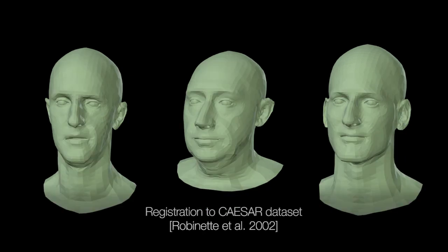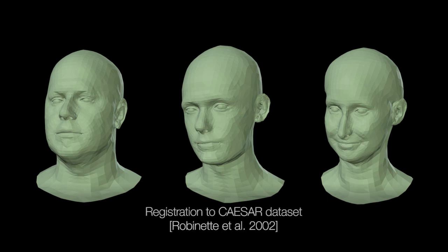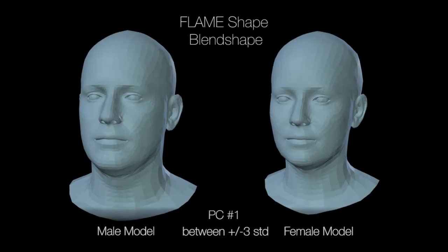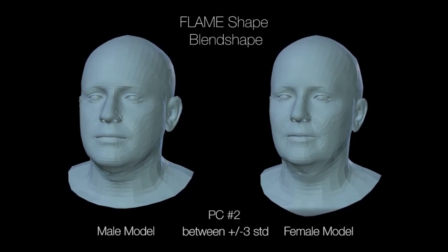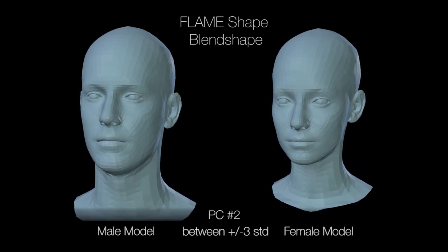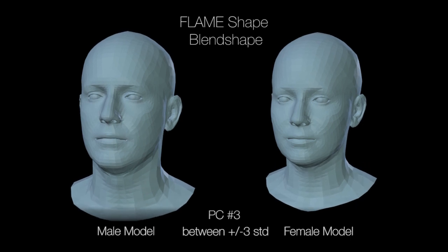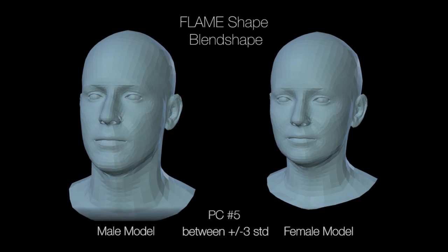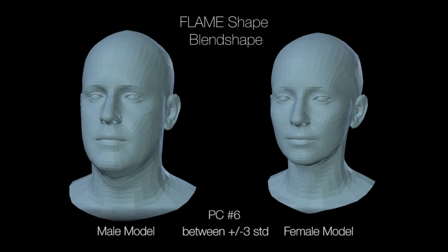FLAME includes a low-dimensional linear shape space for head and face shape. We train the shape model using approximately 4,000 3D body scans from the Caesar dataset. The Caesar faces all have a neutral expression, and the scans are of sufficient resolution to learn the statistics of face shape. We align our rigged template to all the Caesar heads, bringing them into correspondence and enabling us to normalize the pose. We represent head and face shape in a low-dimensional space by performing principal component analysis on the aligned, unposed meshes. We train separate male and female models. The first 49 principal components account for about 98% of the variance in the training set, while 300 account for almost 100%.